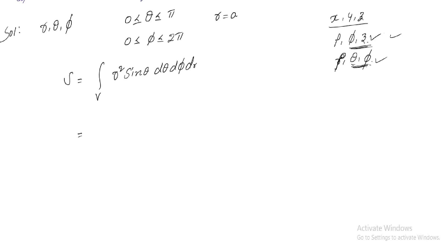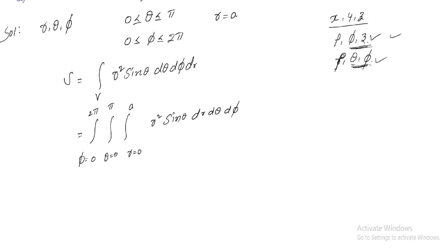Setting up three integrals: φ goes from 0 to 2π, θ goes from 0 to π, and r goes from 0 to a. The integrand is r²·sinθ·dr·dθ·dφ. Evaluating: the r integral gives a³/3, the θ integral gives −cosθ evaluated from 0 to π, and the φ integral gives 2π. This yields (a³/3) × 2π × (−cosθ)|₀^π.